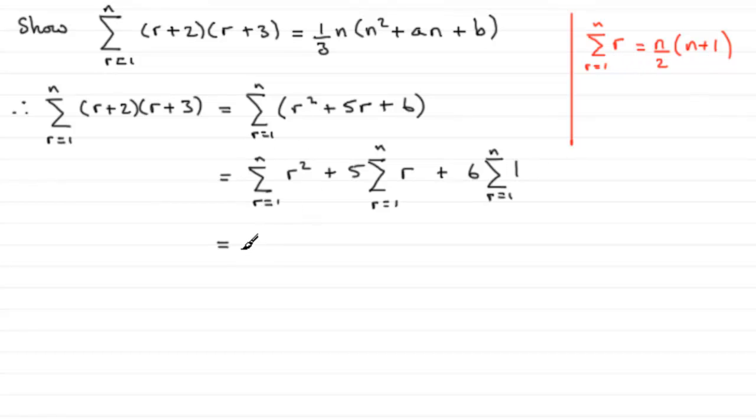Now to do this, all we need to do is substitute our values in. In the first part of this question we saw that this summation was one-sixth of n multiplied by (n+1) multiplied by (2n+1). And then for this term here, if we multiply 5 with this, we're going to get plus 5n over 2 multiplied by (n+1). And if we sum up 1 n times, that's going to be n, so we end up with plus 6n.